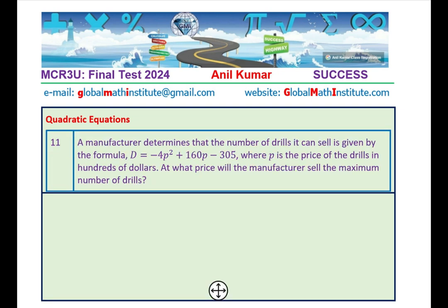Here is question number 11. Another question on quadratic equations. A manufacturer determines that the number of drills it can sell is given by the formula D = -P² + 160P - 305, where P is the price of the drill in hundreds of dollars. Read carefully so that you don't miss on such important things. At what price will the manufacturer sell the maximum number of drills? A couple of ways to do it. You can do completing the squares or you can use the formula minus B by 2A.